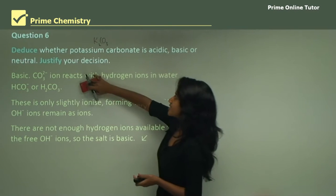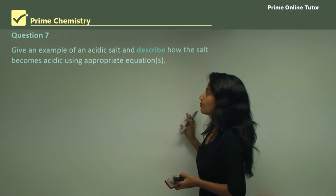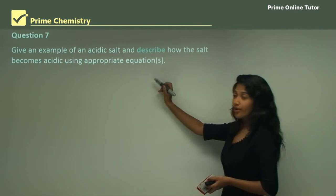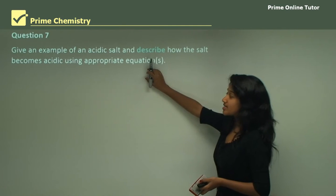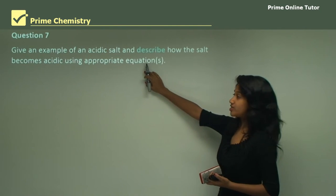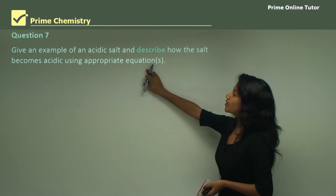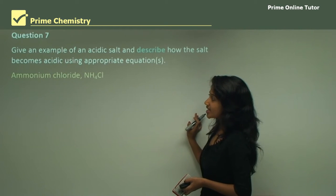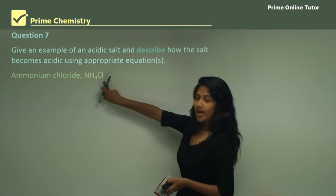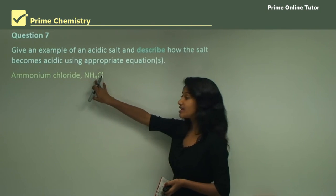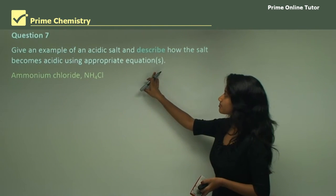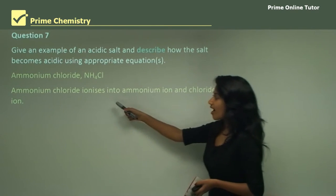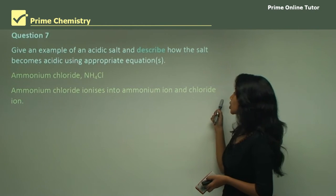Question 7: Give an example of an acidic salt and describe how the salt becomes acidic using appropriate equations. The example is ammonium chloride (NH₄Cl). Always provide your chemical equations. Ammonium chloride ionizes into ammonium ions (NH₄⁺) and chloride ions (Cl⁻).